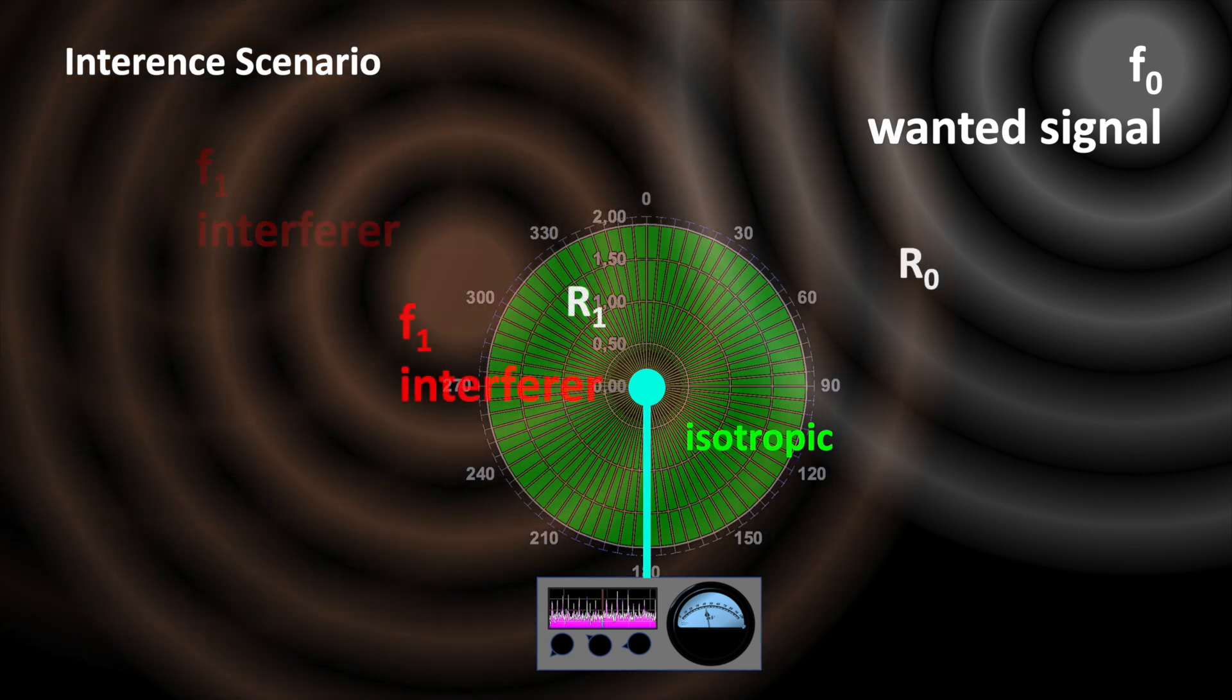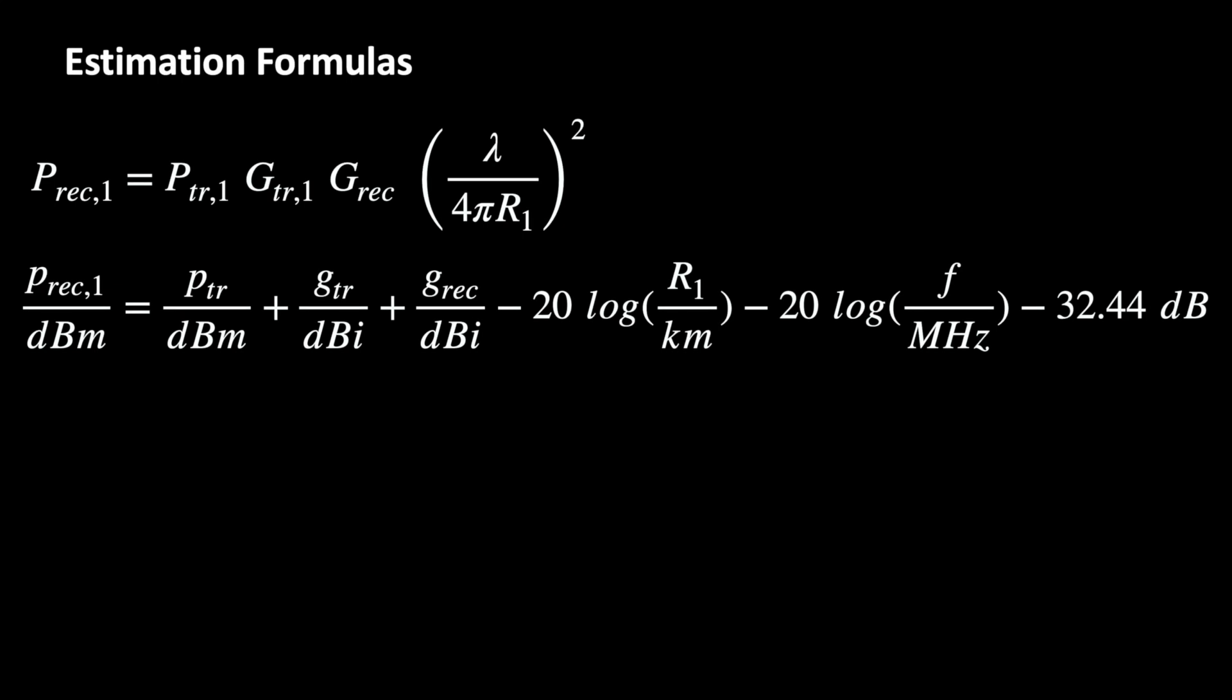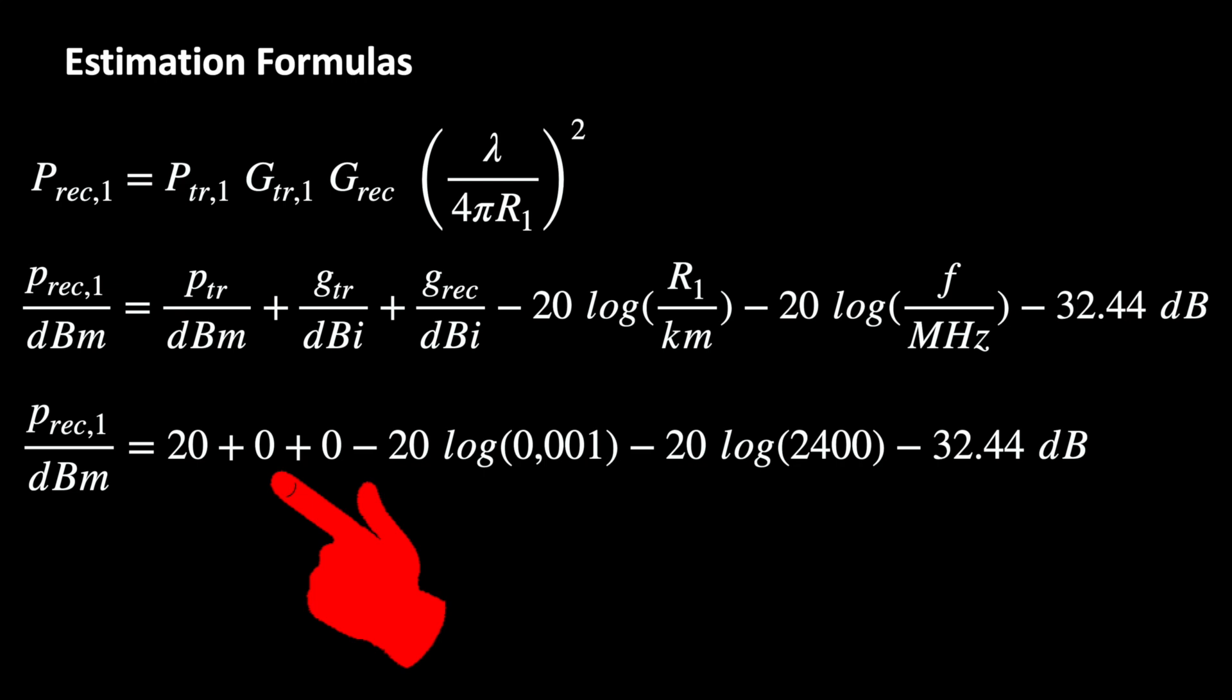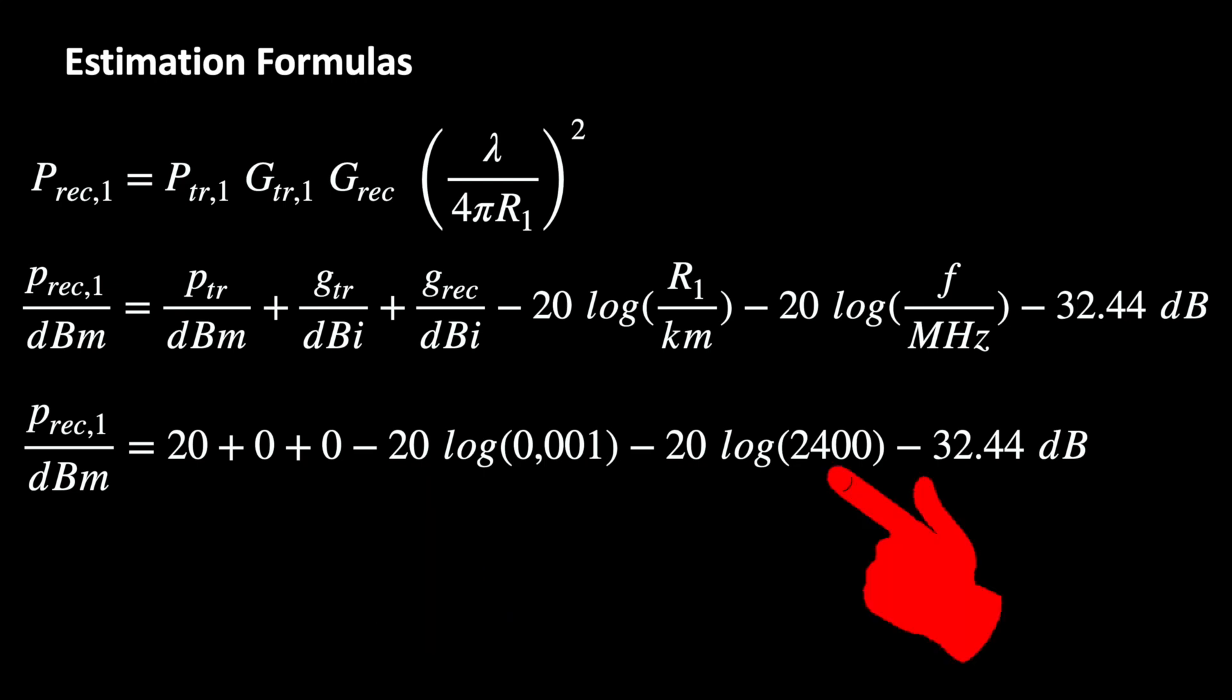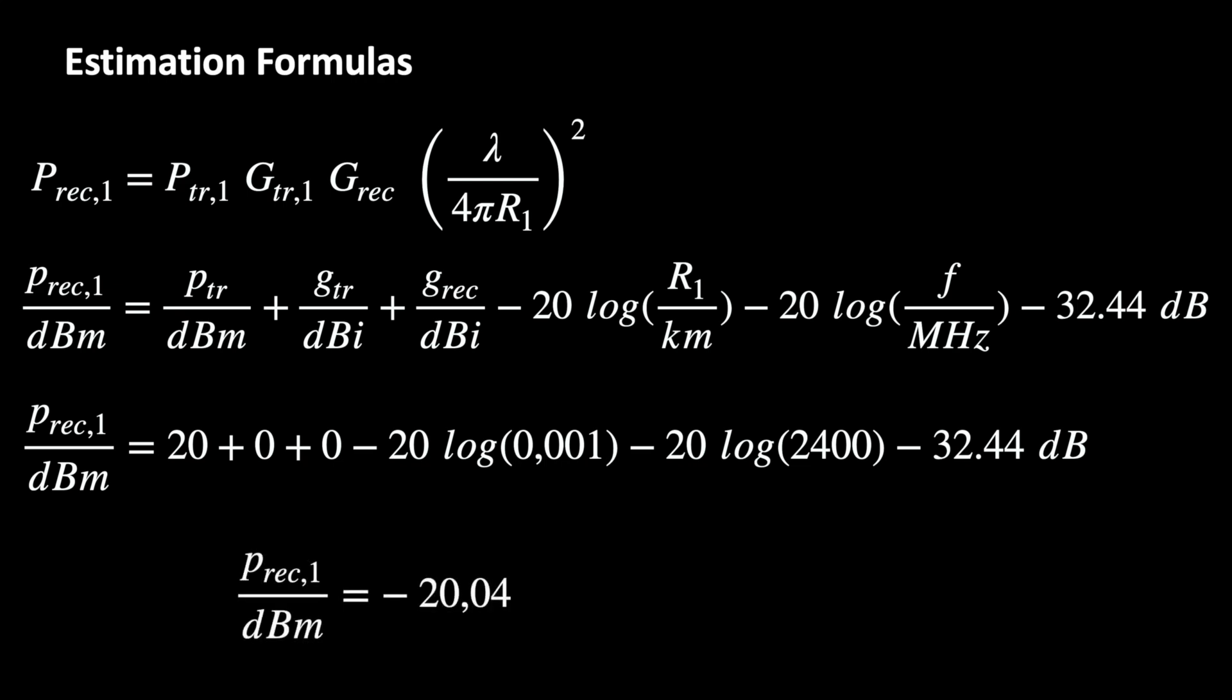A strong signal is caused either by a short distance to the interfering transmitter or by high transmission power. You can estimate this using the Friis equation and I will write it down for you in a logarithmic form as we can use the dBm values that we have at hand. In our Wi-Fi example, we have 20 dBm transmission power, 0 dBm antenna gain, an operating frequency of 2400 MHz and we assume a distance of 1 meter. The calculation yields minus 20 dBm interference signal, which is already 3 dB above the limit for receiver blocking.